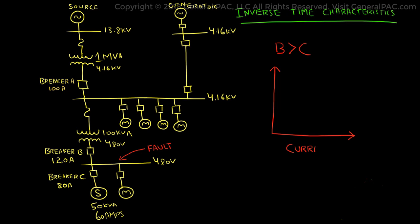We have the current level on the x-axis, and the trip time on the y-axis. For the same value of fault current, the upstream breaker B will have a higher delay time than the downstream breaker C. This is due to the shift in the curves. Breaker C picks up at lower amp rating, while breaker B picks up at a higher amp rating. This is one way to achieve coordination by using inverse time characteristics of the breakers and the breaker amp ratings.